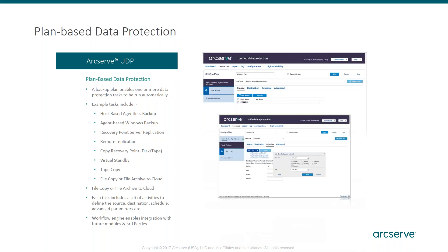We have plan-based data protection. You'll generally start with a backup plan, whether that's agent-based or agentless. Then you add tasks to that: do you want to replicate the data to another location? That location could be another site you have or a cloud location. You can also copy that data to another type of media — either disk or tape — and we support that as well.